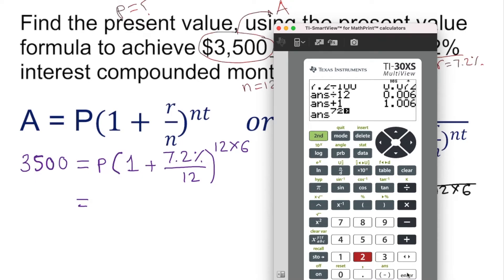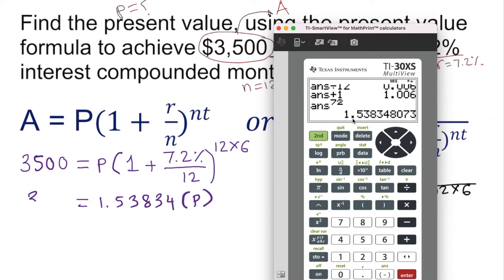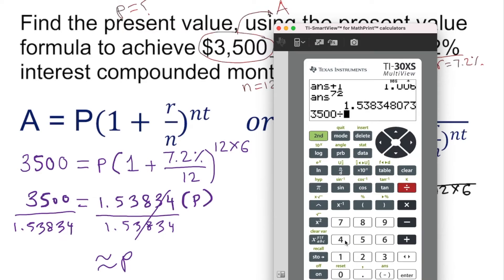Enter. 1.53834 times P equals 3500. Remember this is approximate, there are some decimal numbers left over. We're going to divide both sides by 1.53834, it cancels out, and we have approximately P. Use the calculator: 3500 using the division sign, 1.53834. Remember, the more digits you have, the more accurate it's going to be. It's basically coming up the same thing here.